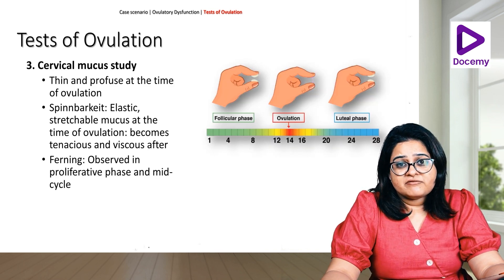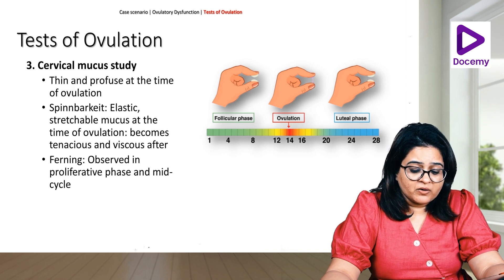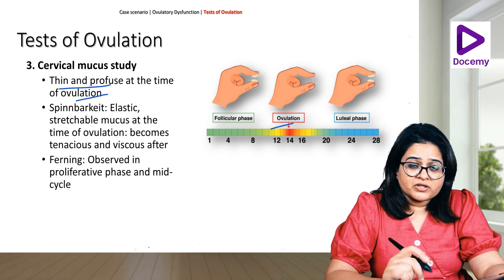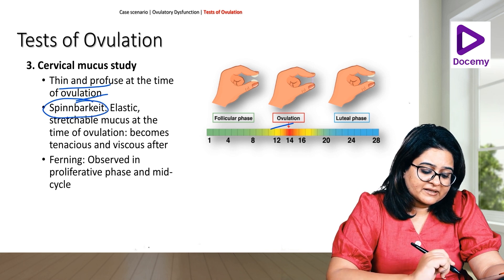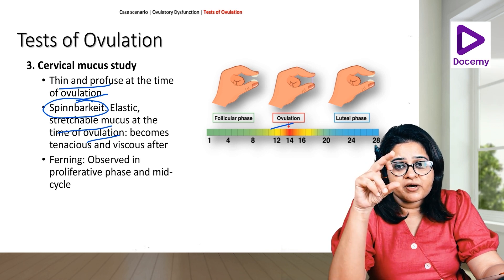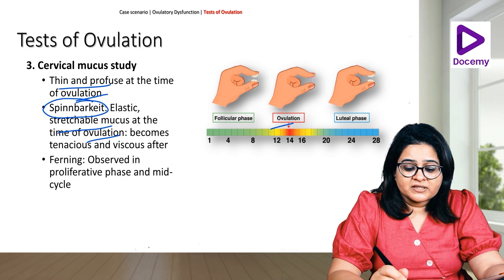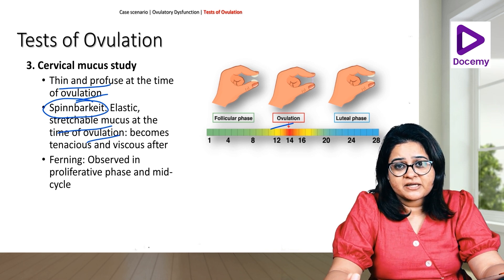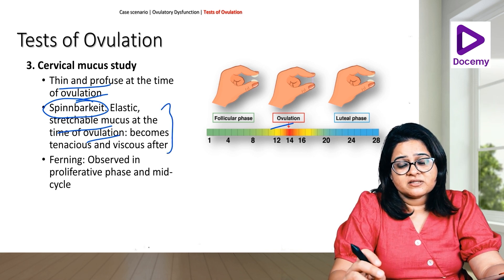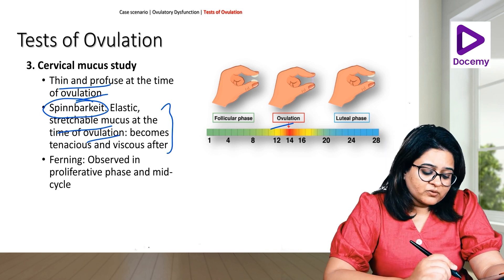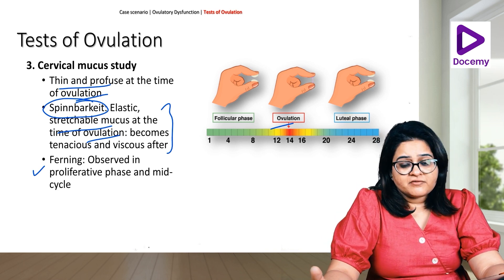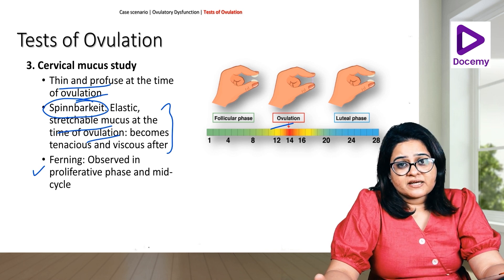Another test the woman can do herself is the cervical mucus test. At the time of ovulation, the cervical mucus is thin and profuse and becomes what is called spinnbarkeit — it is stretchable and resembles raw egg white, becoming elastic. Afterwards it becomes tenacious, viscous, and easily breaks post-ovulation. This spinnbarkeit formation is a sign she is ovulating. Also, if you put this cervical mucus under a microscope you will see a characteristic ferning pattern observed in the proliferative and mid-cycle phase.